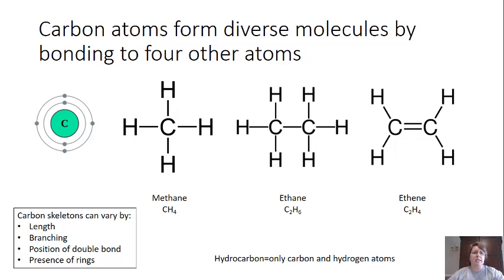One of the first things we need to lay the foundation for in this chapter is that carbon atoms form diverse molecules by bonding to four other atoms — they have to form four different bonds. This is because carbon has six electrons: two in the inner shell, and then four valence electrons available for bonding, which is what allows them to form four different bonds.